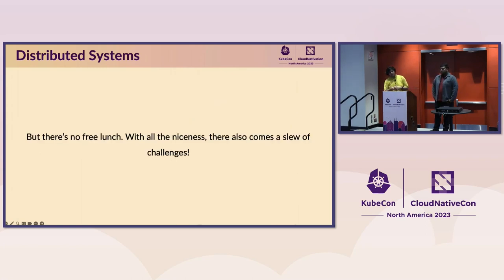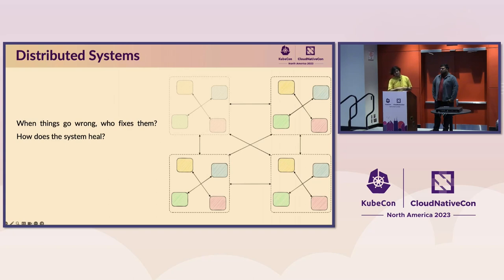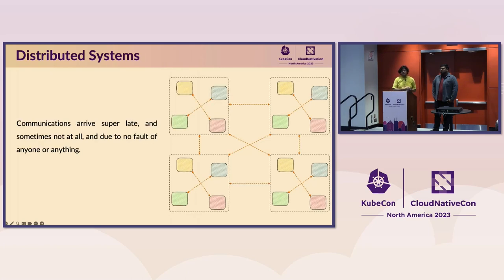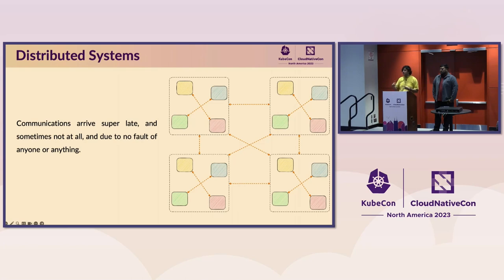But there is no free lunch. With all the niceness, there comes a slew of challenges with distributed systems. When things go wrong, who fixes them? Do I need to restart a machine manually, or can the system heal itself? Communications can arrive super late, sometimes not at all. Due to no fault of anyone, a natural disaster or a lightning bolt can strike a network cable. All the things that make distributed systems powerful are the very things that can break and make it fail.